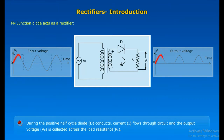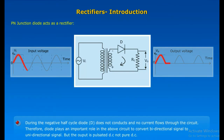During the positive half-cycle, the diode conducts, current I flows through the circuit, and the output voltage V0 is collected across the load resistance R. During the negative half-cycle, diode D does not conduct and no current flows through the circuit. Therefore, the diode plays an important role in converting a bidirectional signal to a unidirectional signal. However, the output is pulsated DC, not pure DC.